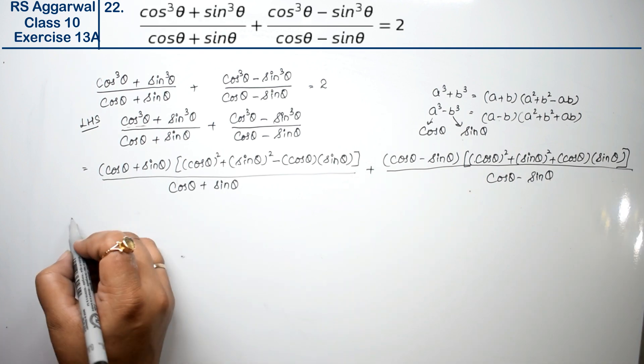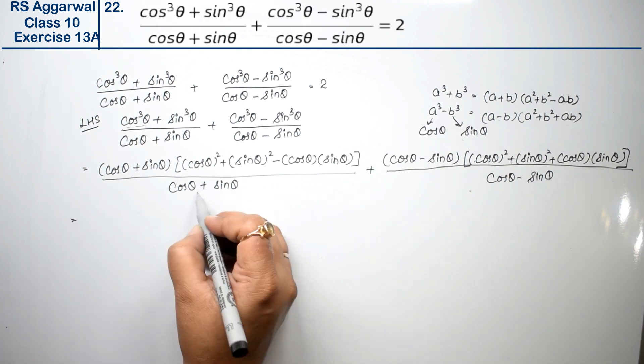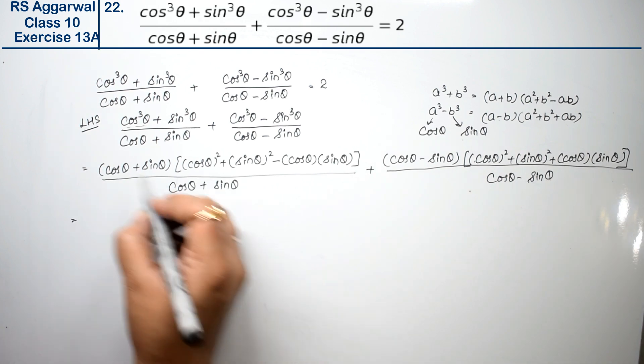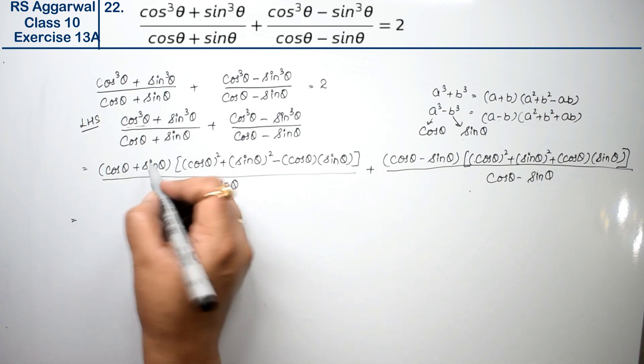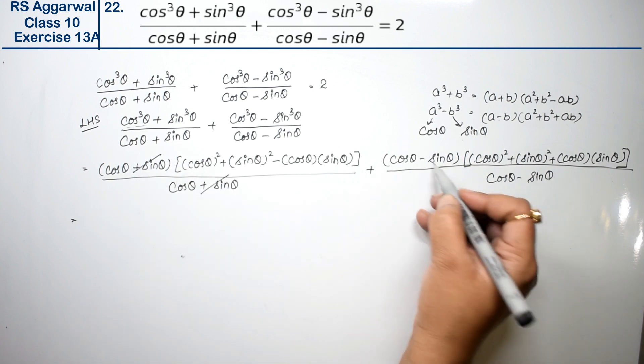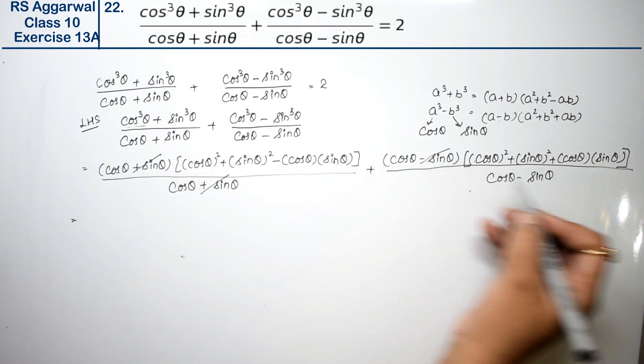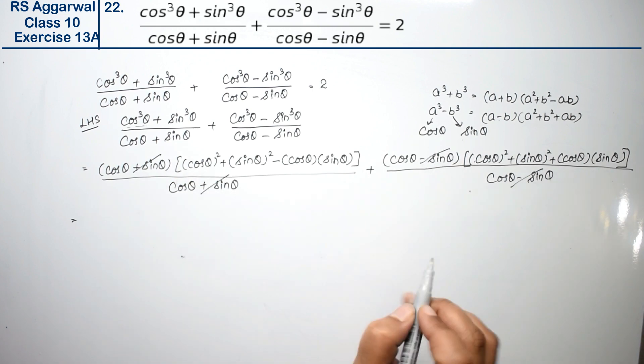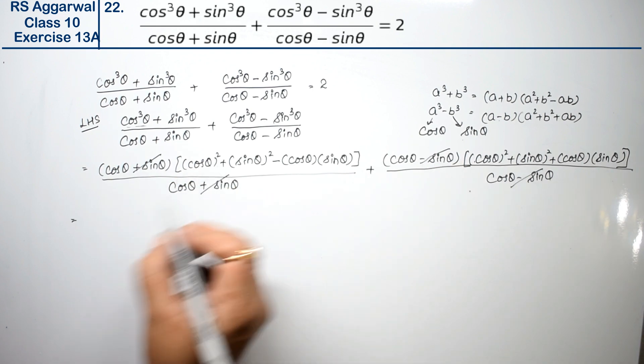Now, (cosθ + sinθ) in the numerator and denominator cancel. Similarly, (cosθ - sinθ) in the numerator and denominator cancel. Now what do we have?